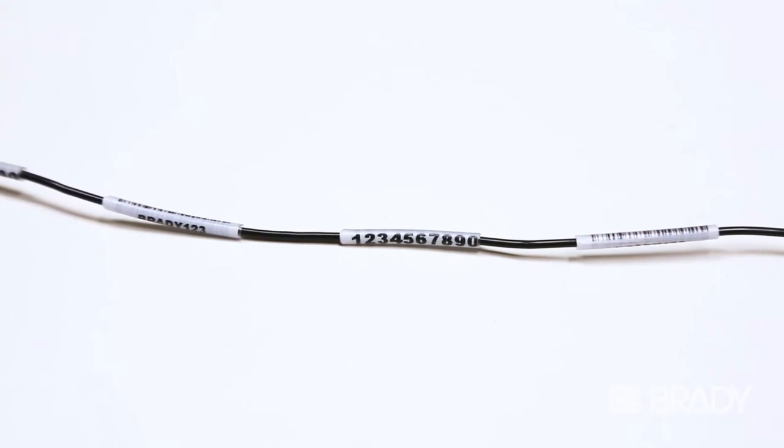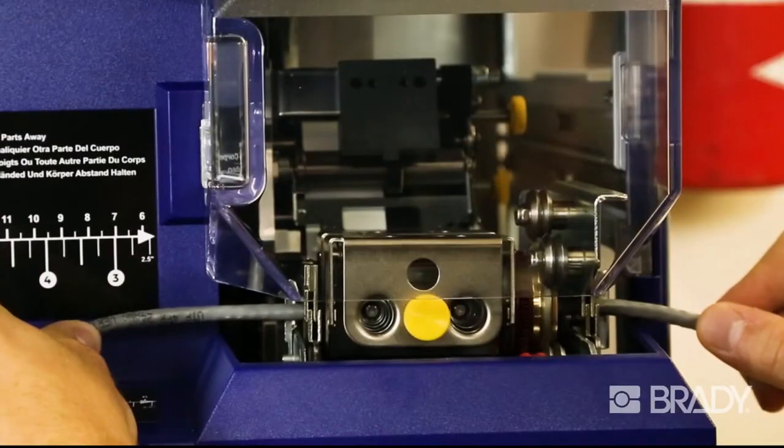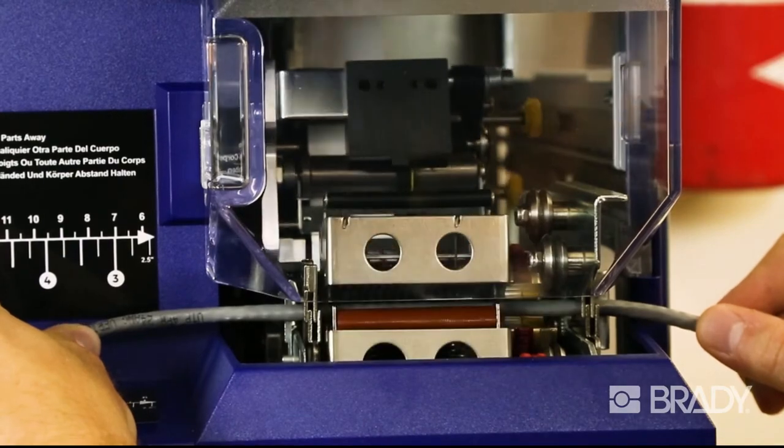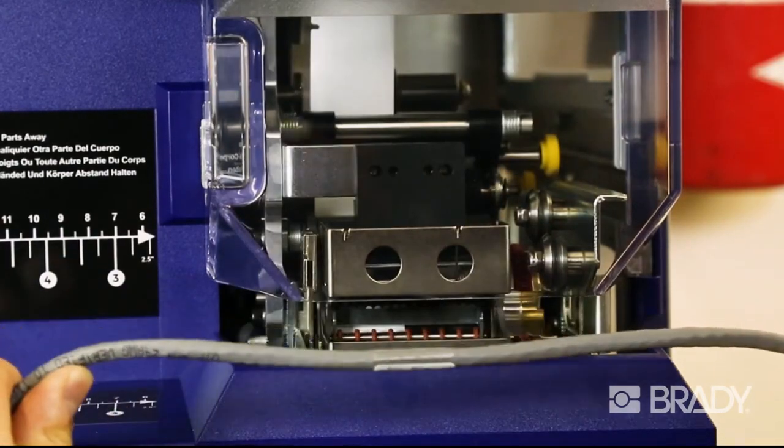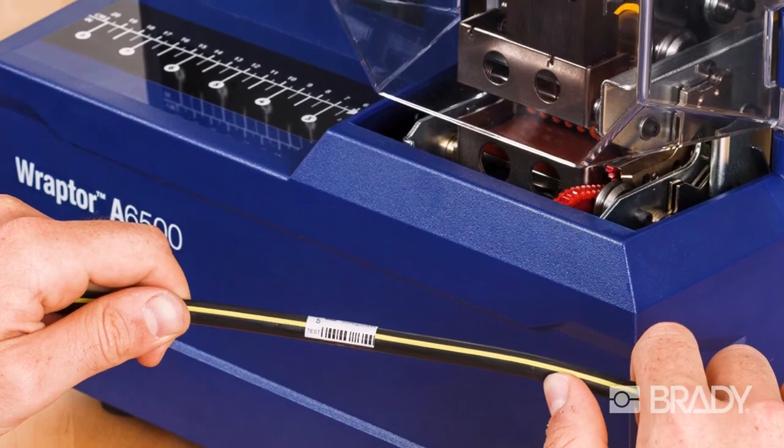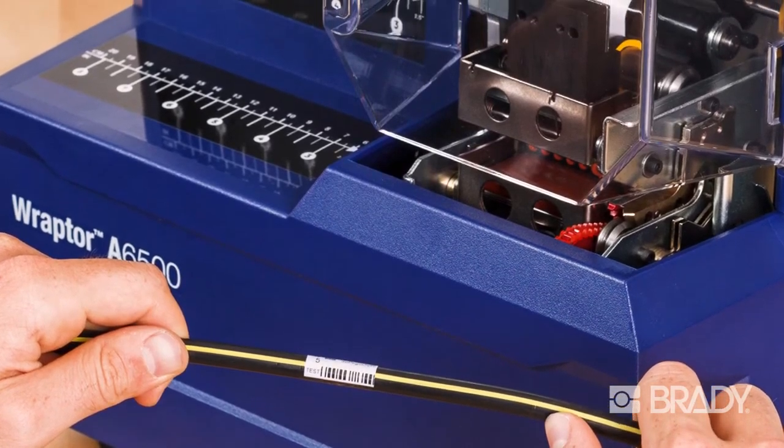Add the permanence and clarity of 300 dpi thermal transfer printing, Raptor A6500's consistent tight wrap that limits spiraling, bubbling, and wrinkling, and you are assured a long-lasting label that is clear and easy to read.